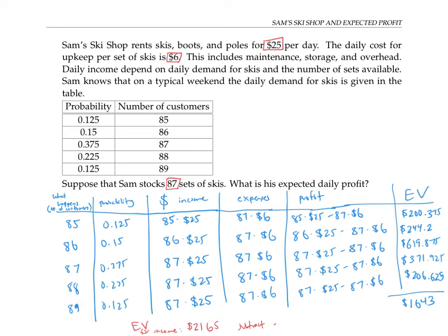And then when we subtract the fixed expenses—87 times $6 is $522—we would have gotten $2165 minus $522, which works out to the same expected profit of $1643.